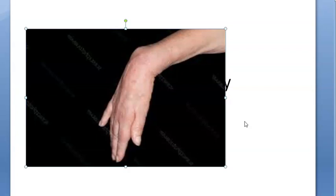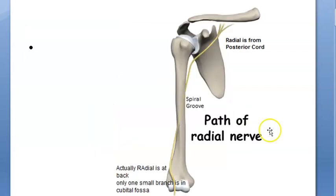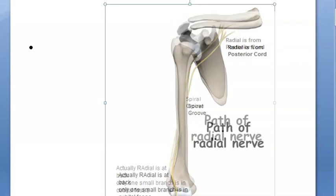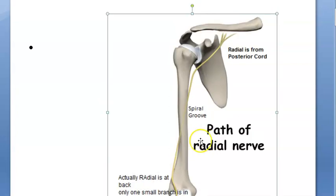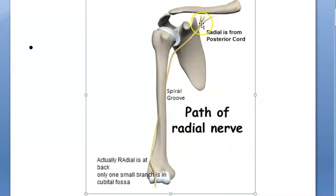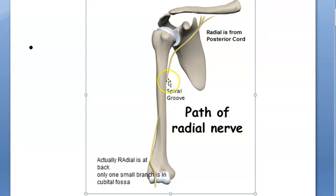The radial nerve comes from your brachial plexus. It is the posterior cord of the brachial plexus, and it goes behind the humerus in a spiral groove, then comes again in front of the lateral condyle of the humerus.